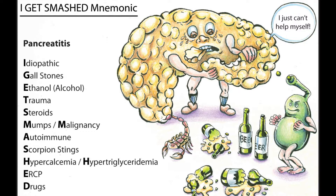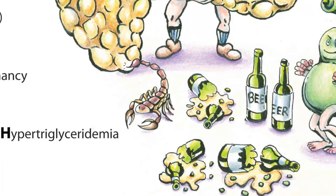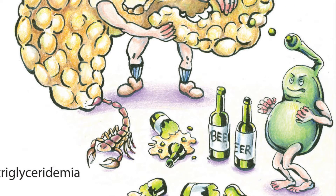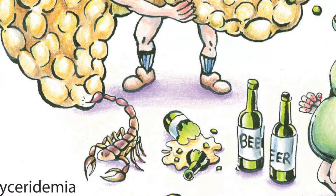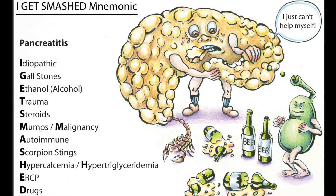In our cartoon here, we've drawn bottles of alcohol, the gallbladder shooting gallstones at the pancreas, the scorpion, and the pancreas himself essentially autodigesting himself.